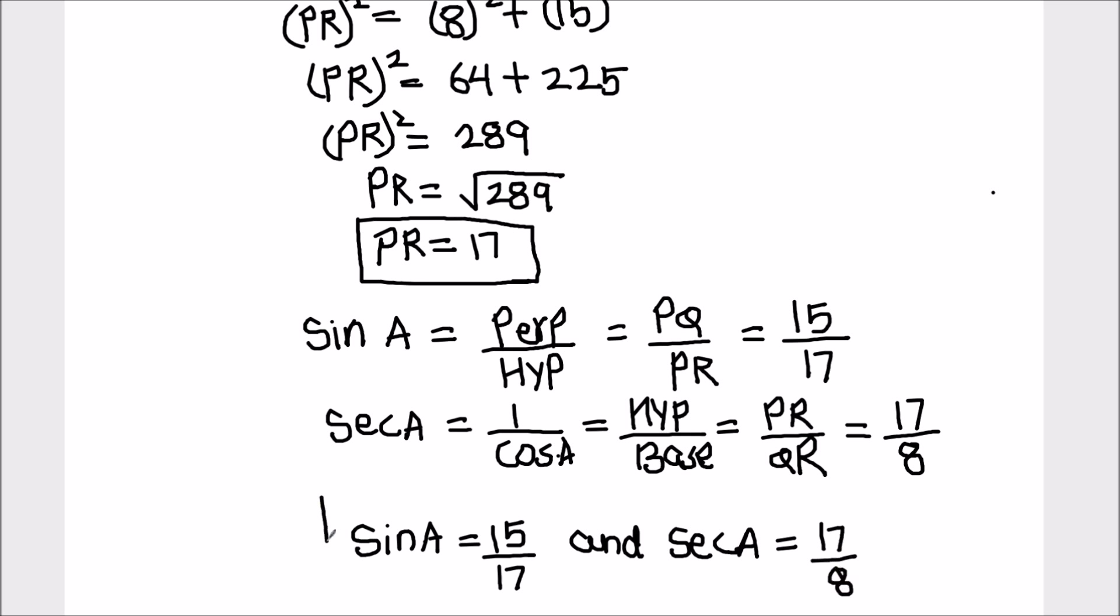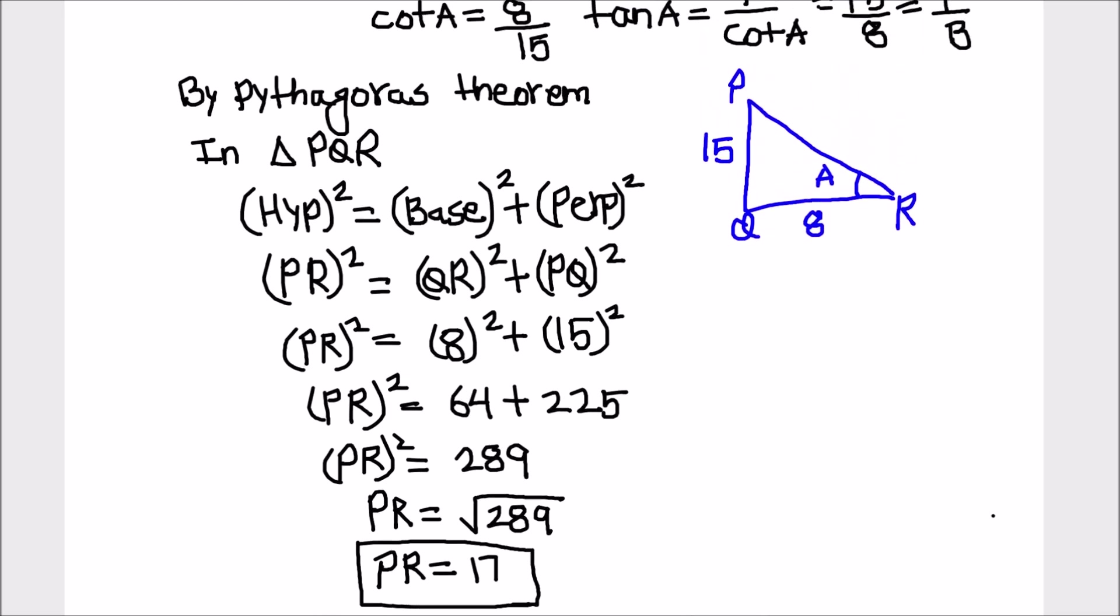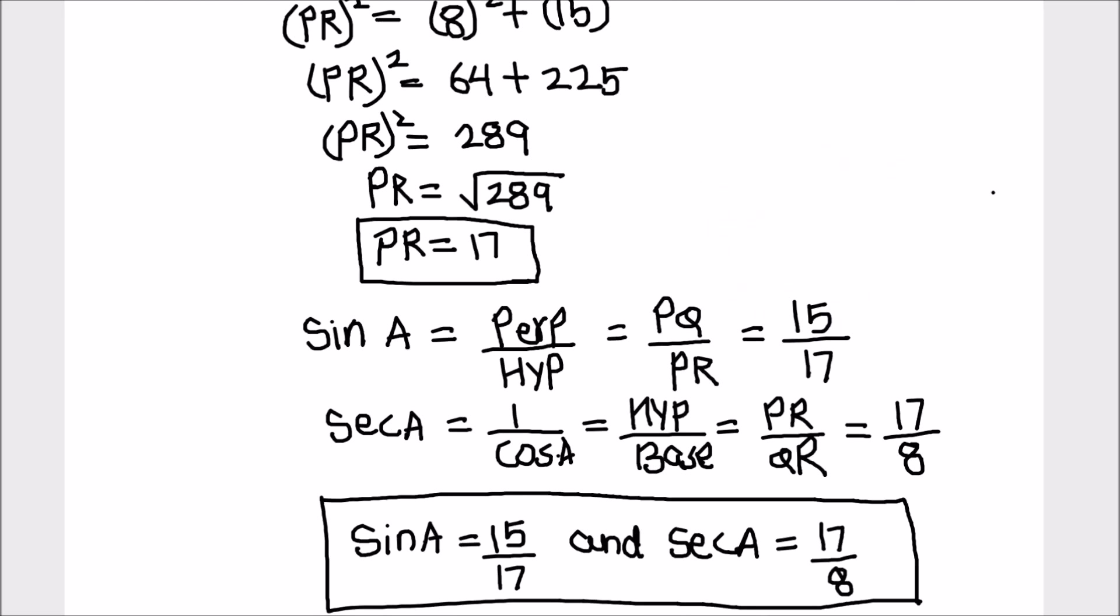This is how we find the value of other trigonometric ratios if only one trigonometric ratio is given to us. I hope this video is helpful to you. If you like the video, please hit the like button and subscribe to my channel for more math videos. Thanks for watching.